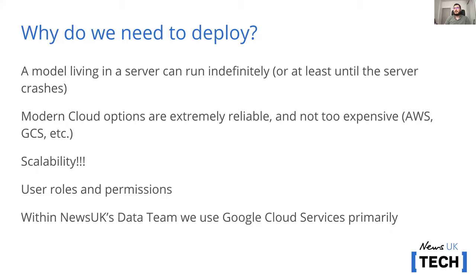Why do we want to deploy a model online rather than just running it locally? Running it only locally creates the issue of having it running on a machine which can shut down or break, which isn't ideal if you're trying to create a data product with end users. You want to push to a cloud somewhere. Modern cloud options like AWS and Google Cloud Services are very reliable — not cheap, but not too expensive either. Running something small costs a couple of dollars a month. Most also have free trial versions. If you're working for a big company, chances are they would already have invested in something like this, so knowing how to use it is super important.